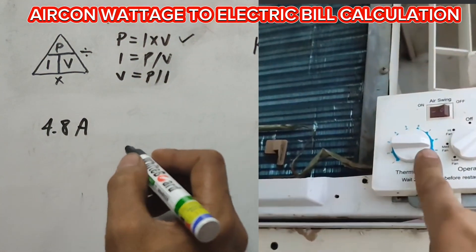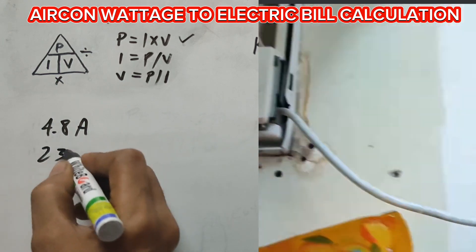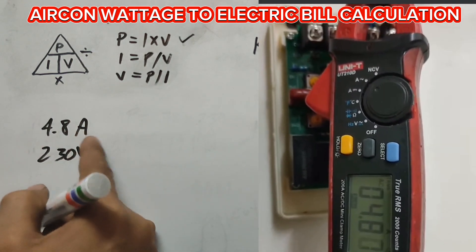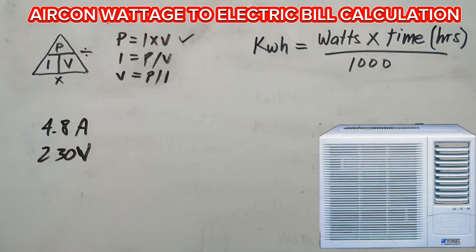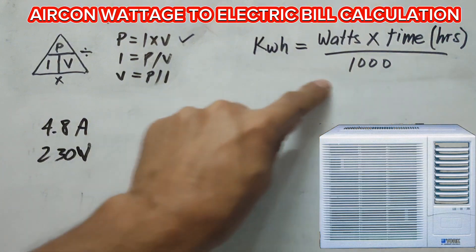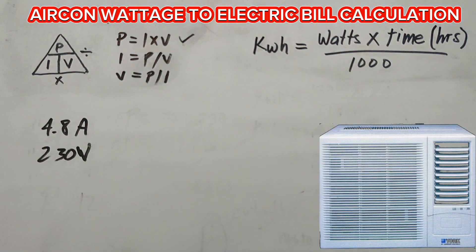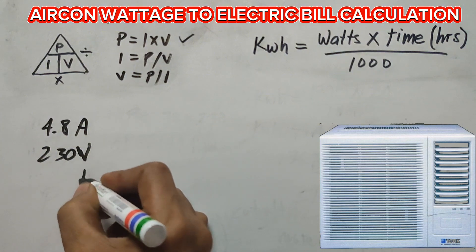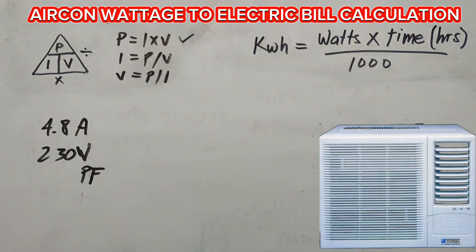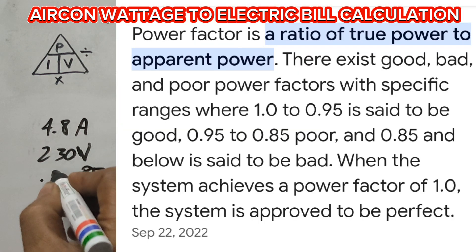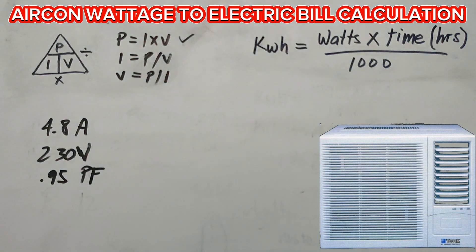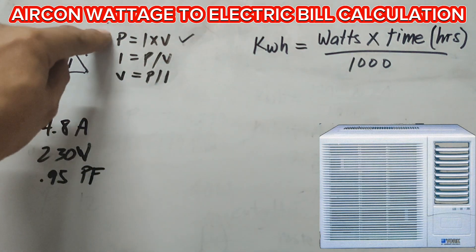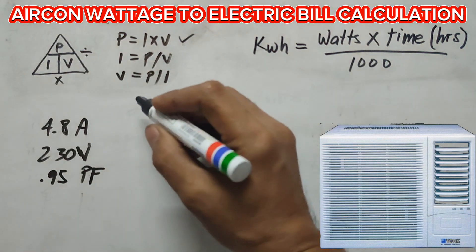The voltage is 230V. Since that is given, the missing value is P, which is the power measured in watts. We need that watt value in our formula. Some suggest that the compressor is a motor with inductance, therefore we're going to use a power factor. The value of power factor I choose is 0.95 — a good power factor ranges from 0.85 to 1.